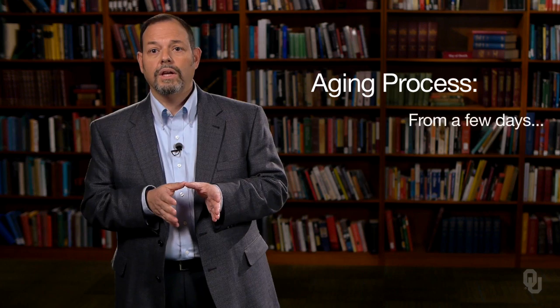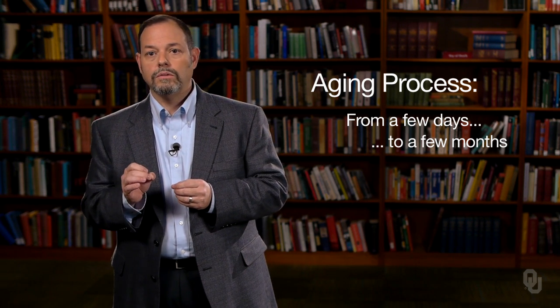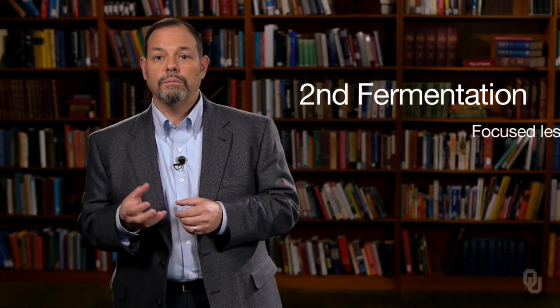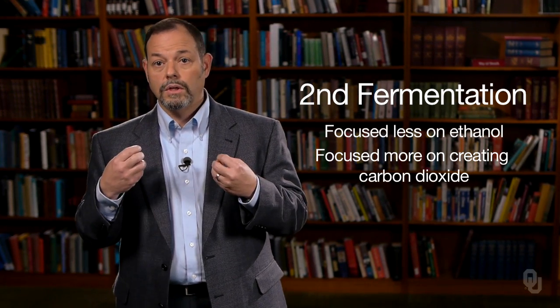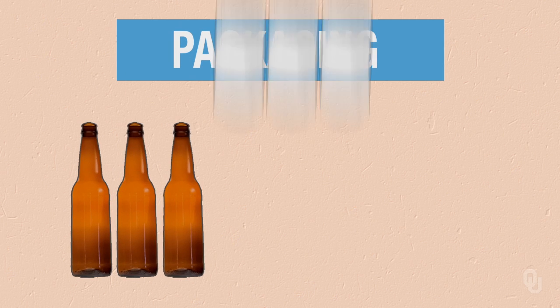Once fermentation is done, we have something that really resembles beer, but we're going to let it age — sometimes just a few days, in other cases maybe months — so that different taste components can either develop or be inhibited. At that point, we do a second fermentation, because beer is carbonated. The second fermentation is focused less on creation of ethanol and more on the creation of carbon dioxide. The carbon dioxide carbonates the beer and gives us the mouthfeel we're used to. The ethanol and carbon dioxide were both historically important for keeping beer stable. Then we package it in bottles, cans, or kegs.